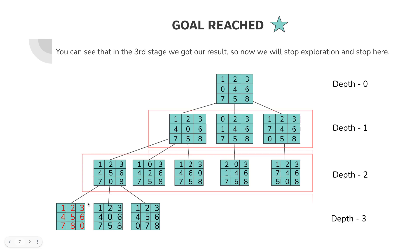Once our goal state is reached, we stop the program. If the goal state had not been reached, we would need to explore all remaining possible states, following the same steps again and again until we find our result. That's all from my side. In the next video I'll be discussing the program related to BFS. If you have any queries you can reach out through the comments. Thanks, please subscribe to my channel.